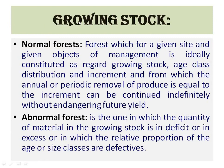On the basis of growing stock — whatever is growing in the forest is known as growing stock. Normal forest: a forest which, for a given site and given object of management, is ideally constituted as regards growing stock, age class distribution, and increment. In simple words, if we have normal growing stock, normal age classes, and normal increment, we call that forest a normal forest. Abnormal forest: when we do not have normality in growing stock, either in age class or in increment, the forest is known as abnormal forest.